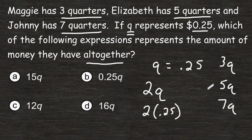And to see how much they have all together, we can simply combine these together because they are like terms. 3Q plus 5Q plus 7Q is a total of 15Q.